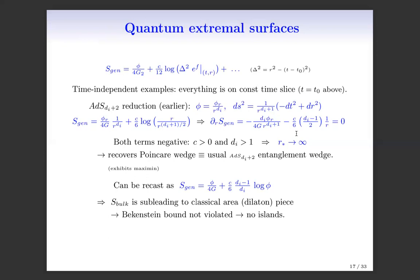One can recast the generalized entropy to see that as long as the dilaton phi is not too small, S_bulk is subleading to the classical area — the latter goes like phi while the former goes like log phi. So S_bulk is always subleading and the two terms never compete. The Bekenstein bound is never violated and there are no islands in this case. There are other examples where one appends a flat space region beyond the ADS boundary, where islands do appear, but in the theories considered here, only the ADS boundary is present.